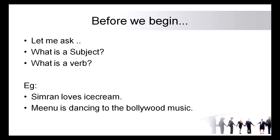For example, consider the sentence: Simran loves ice cream. Simran is the subject because she is the person who is loving the ice cream, and the verb would be 'loves.' In the second sentence, Minu is dancing to the Bollywood music — here Minu is the subject and 'is dancing' is the verb. Both words are included when marking the verb because 'is' is the auxiliary verb and 'dancing' is the main verb. Both are equally important and both would be marked as the verb.